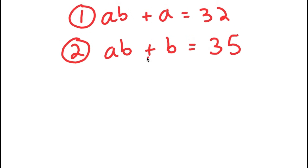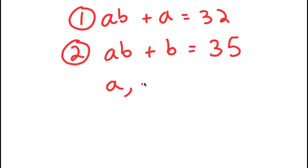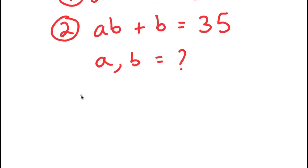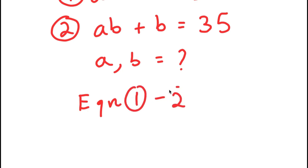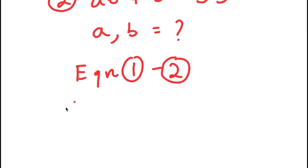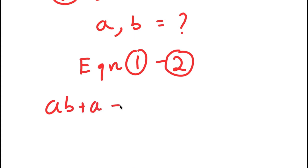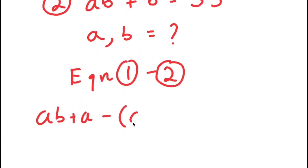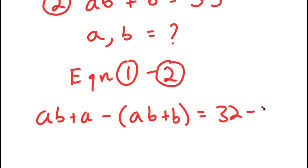To solve the system of equations, I have to find the value of A and B. To start out, what I'm going to do is subtract equation two from equation one. So equation one minus equation two: equation one is AB plus A equals 32, so I have AB plus A minus (AB plus B) is equal to 32 minus 35.